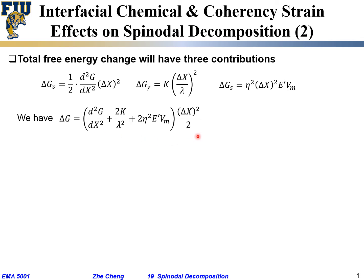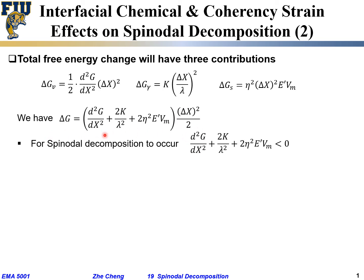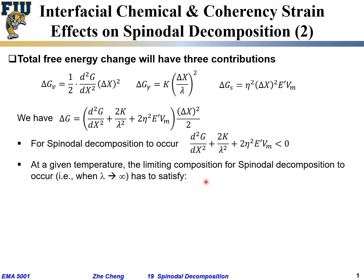All three terms together give us the free energy change during spinodal decomposition. For spinodal decomposition to occur spontaneously, since the squared term is always positive, delta G must be negative. Therefore, the summation within the bracket—containing the second derivative of Gibbs free energy, the 2k over lambda squared chemical term, and the 2 eta squared reduced modulus times molar volume geometric term—must be smaller than zero.